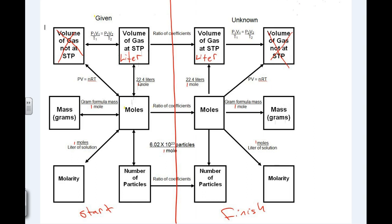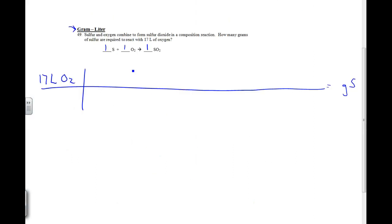So we're going to go down using 22.4 liters per one mole. Then we're going to go over using the ratio of coefficients. This will be easy because it's one to one. And then we'll use the gram formula mass of whatever our desired unit is, and we'll be ready to go. So whatever's here always goes there. Liters, O2.